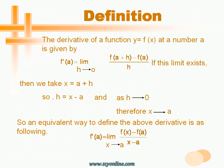Let's look at the mathematical equation to find the derivative of a function at number a. f'(a) equals the limit as h approaches 0 of f(a+h) minus f(a) over h. If this limit exists, then we take x equals a plus h, where h is an infinitely small value. In other words, we define the derivative as a small change in the function with respect to one of its variables.